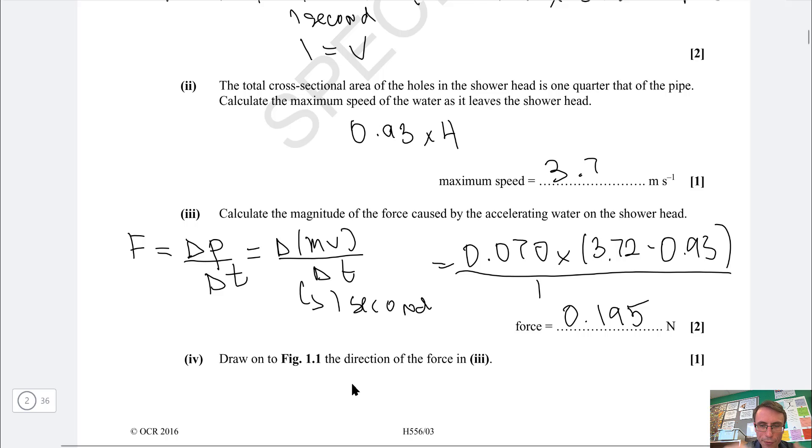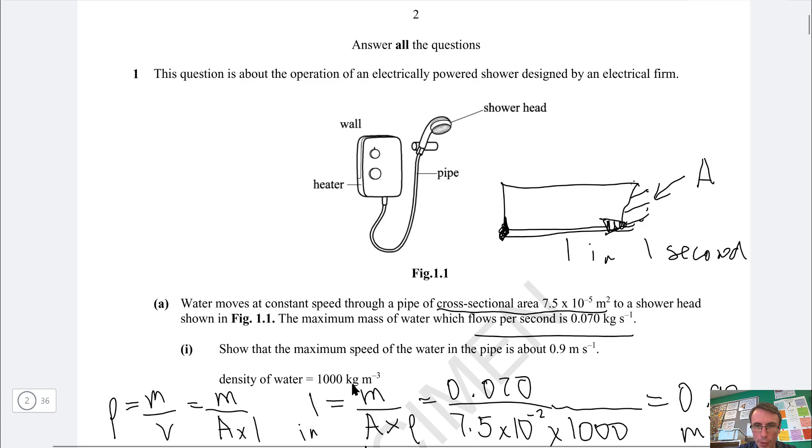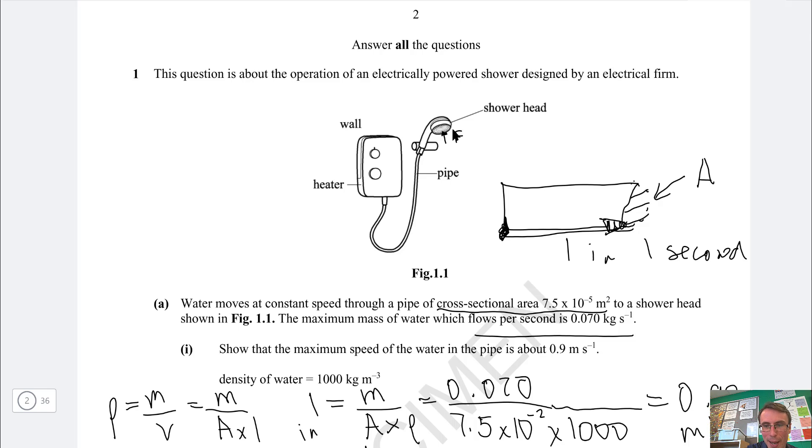Next, draw on the figure the direction of the force. Well if the fluid is going this way then the shower head is going to experience an equal and opposite force which is going to be opposite to the direction of the fluid. This here will be the force F acting perpendicular to the face and opposite to the direction of flow. That's why the shower head will move around because it's experiencing a force.